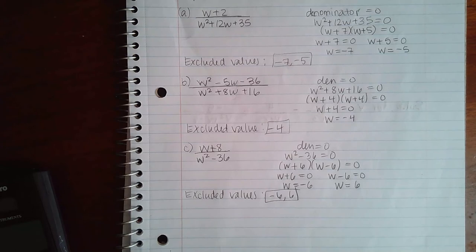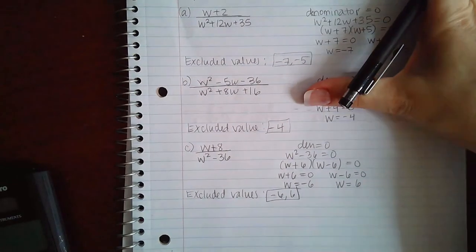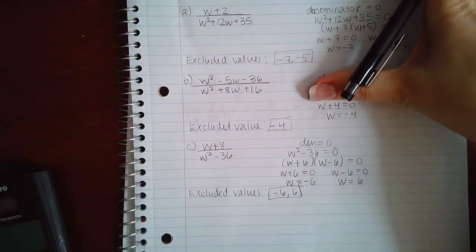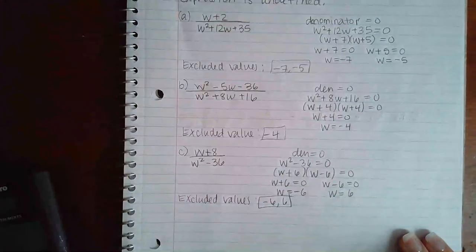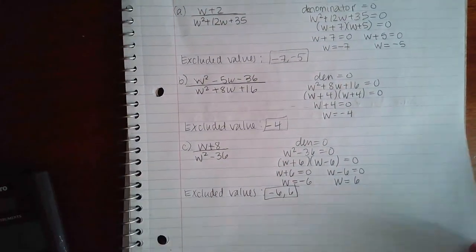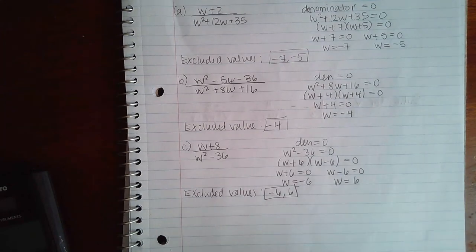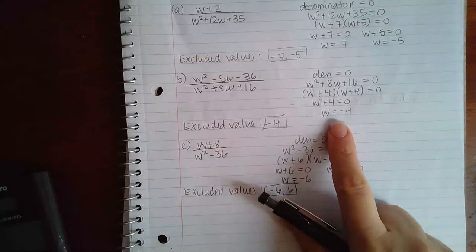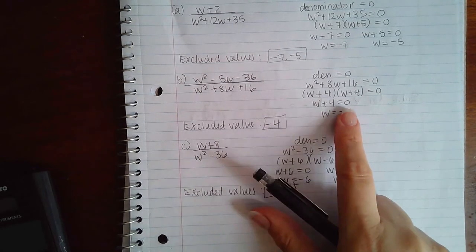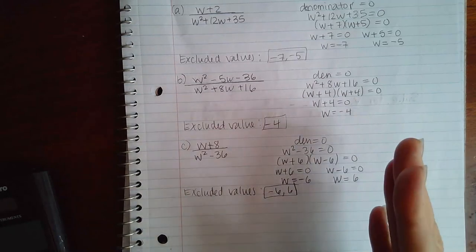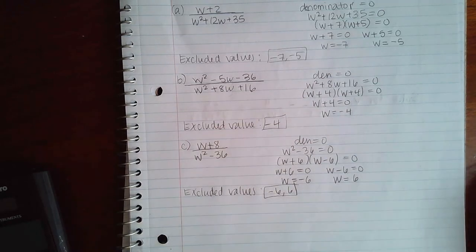Except your denominator looked like this: W plus 4, and so then you only had that one excluded value. Difference here is now I have a quadratic in the denominator, so I might have multiple excluded values. Might, right? This one didn't have multiple, it only had one excluded value. So you have to factor it, see what those factors look like, and then you'll know how many excluded values you'll have.